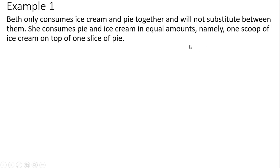So what we want to first do is just calculate the ratio of scoops of ice cream and slices of pie, and in this case it's going to equal 1. One slice of pie for one scoop of ice cream.